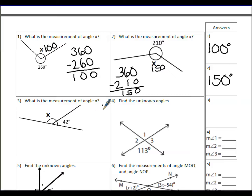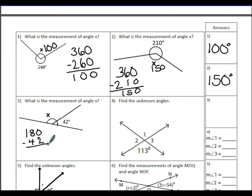To find the measurement of angle X on a straight line: we only have half the circle, which equals 180 degrees. Taking 180 minus 42 degrees already measured gives 138 degrees for the missing angle. These angles are supplementary.